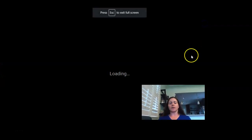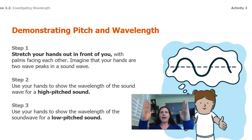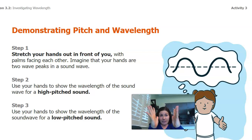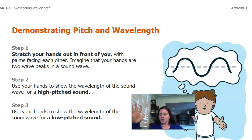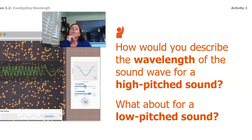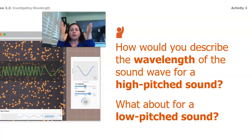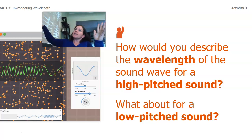Let's actually visualize this. Put your hands in front of you with your palms facing each other — imagine our hands are sound waves. A high-pitch sound was all squished together and squeaky, and a low-pitch sound was really spread apart. So how would we describe the wavelength of a sound wave for a high-pitch sound? I would describe it as really close together, really packed-in waves. For a low-pitch sound I would describe it as really long, rolling waves — really spread-apart waves.